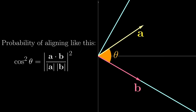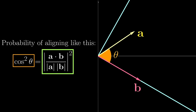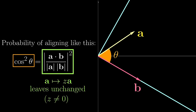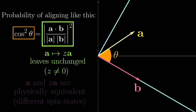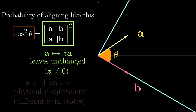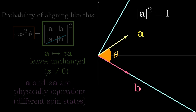An important consequence is that the length of the spin state a doesn't matter to the probability. Geometrically, the length of a doesn't affect theta, so probability won't change. Even from the perspective of the dot product, if you multiply a by any non-zero complex number z, the factor z cancels out, leaving the probability unchanged. Because of this, we say that a and z times a are physically equivalent — sure, they are different spin states, but they produce physically indistinguishable results. Similarly, the length of b also doesn't matter, so it will be convenient to normalize the vectors to have length 1. From now on, we will work on spin states with length squared equal to 1.